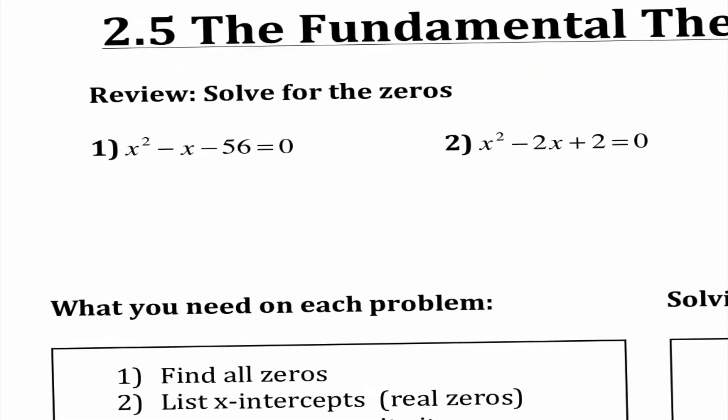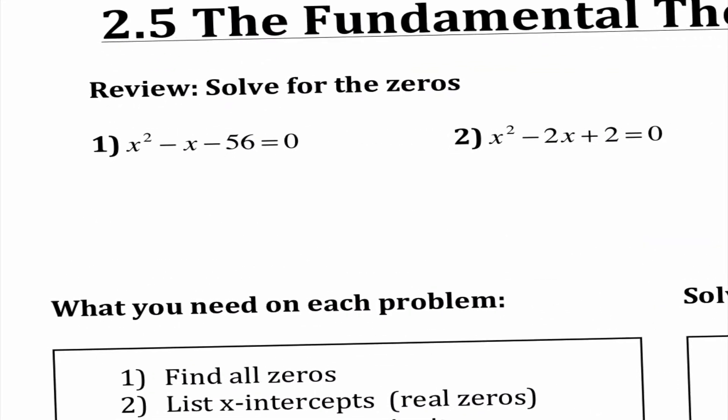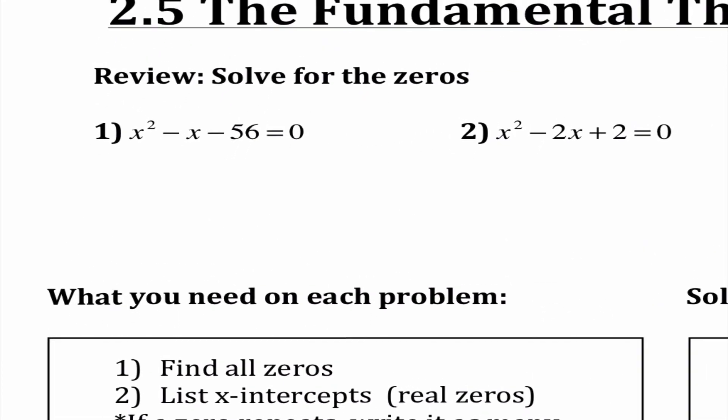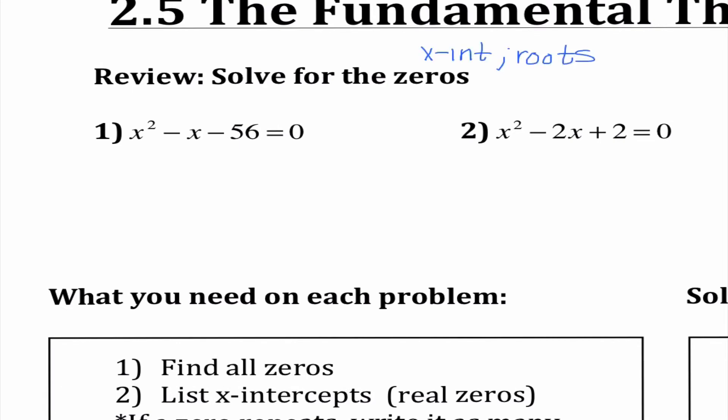We're going to start off by solving for the zeros. Our vocab: we know zeros are the x-intercepts, the roots. Zeros covers a little bit more, because zeros infers that they are both real and imaginary, where if we just see x-intercepts, we know that those are only the real zeros.